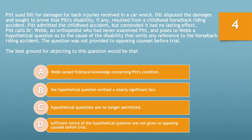The best ground for objecting to this question would be that: A, Webb lacked first-hand knowledge concerning Pitt's condition. B, the hypothetical question omitted a clearly significant fact. C, hypothetical questions are no longer permitted. Or D, sufficient notice of the hypothetical question was not given to opposing counsel before the trial. Take 10 seconds and choose the best answer now.